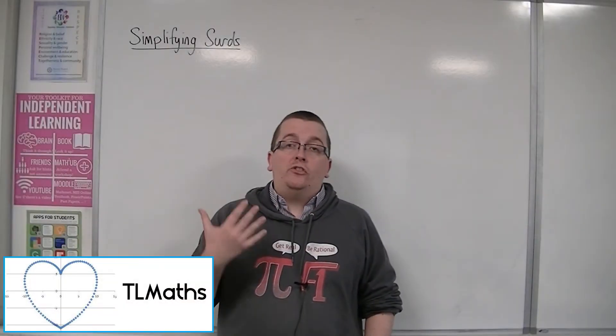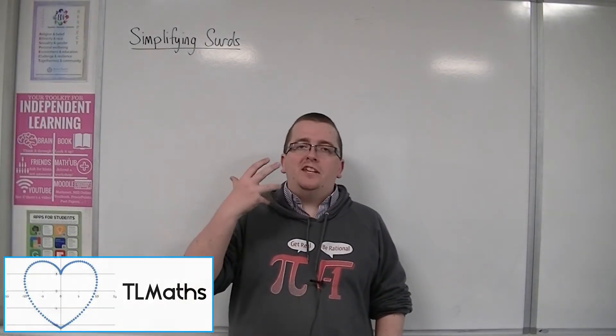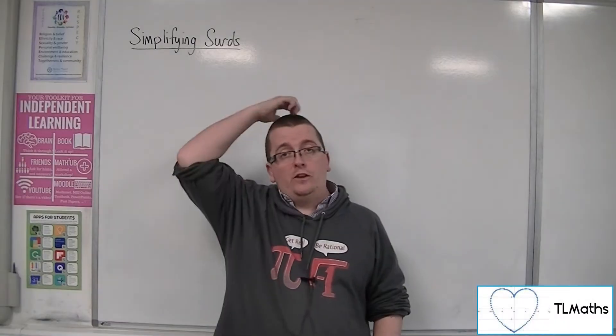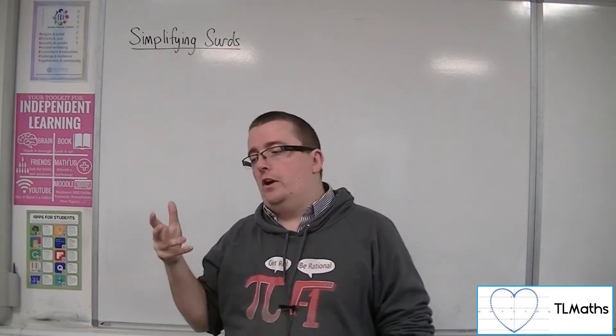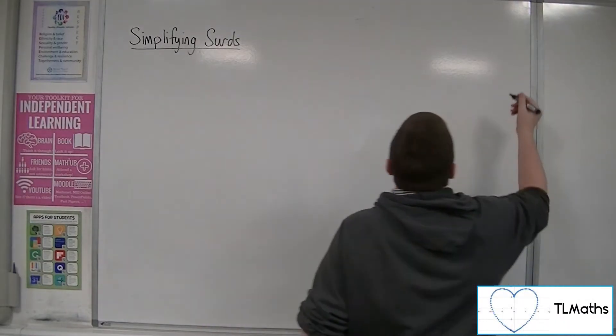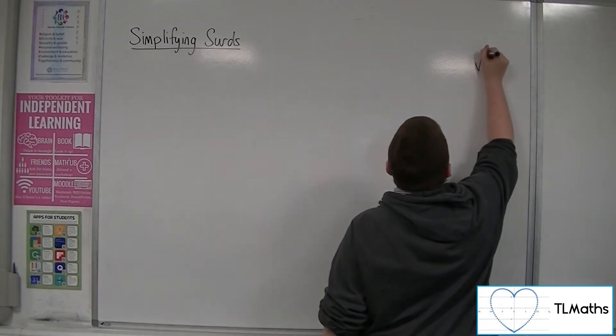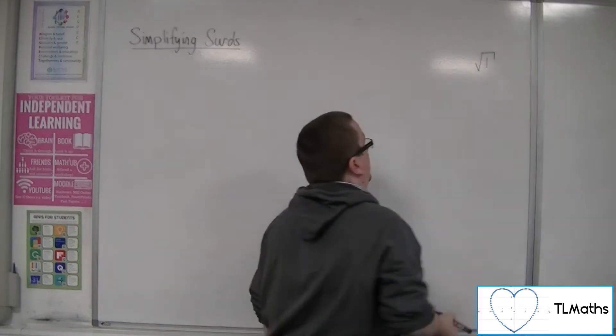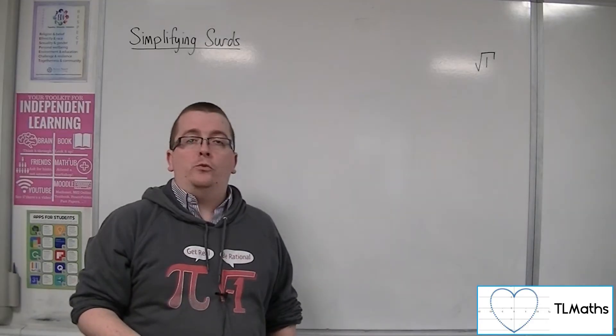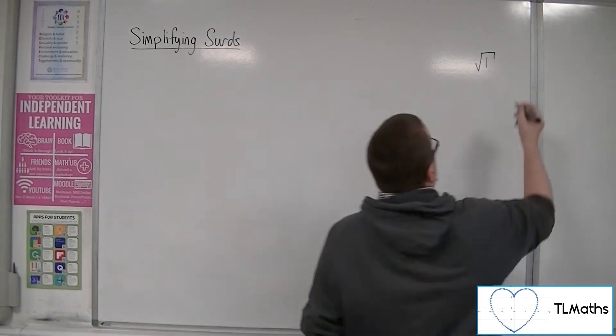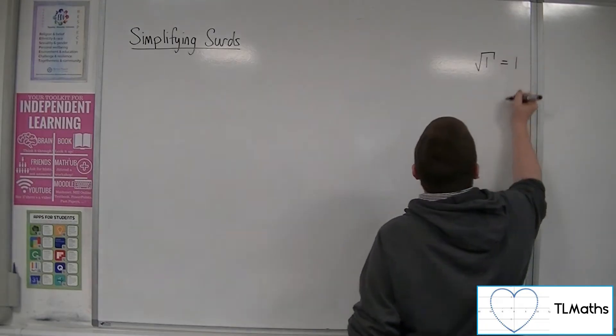A surd is a square root that cannot be simplified down to a whole number. For example, if you just start off by writing out potential surds, you might start with the square root of 1, but square root of 1 is just 1, so root 1 is not a surd.